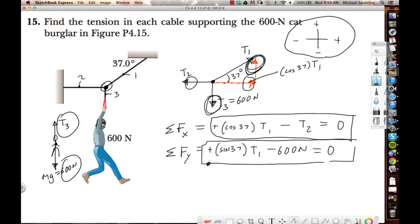Now we can take this y equation. What's the only thing missing in there? T1. I'll let you do the algebra. T1 works out. I'll just show it. So T1 works out to be 600 Newtons over sine 37, which comes out to be 997. So T1 is 997.